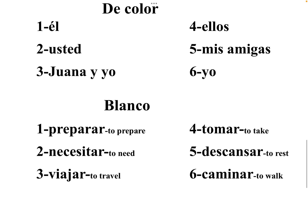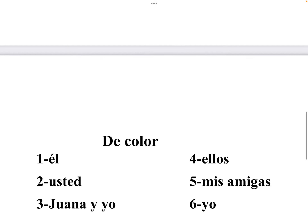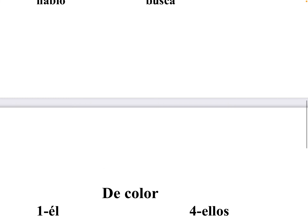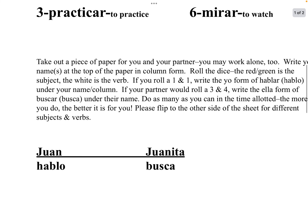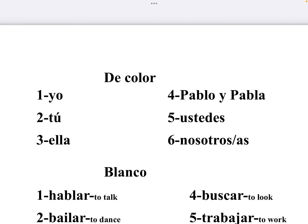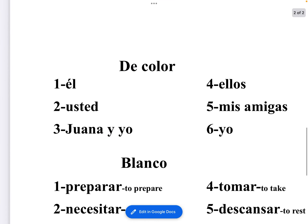On the back side there are different subjects. Remember: él and usted are third person singular. Juana y yo is first person plural. Ellos and mis amigas are third person plural. And yo is first person singular. Spend about seven or eight minutes on each side, going back and forth — the more you do, the better. Put your names on top, flip to the other side after seven or eight minutes, and do this for about 15 minutes total. Then turn it in to Señora Berg.